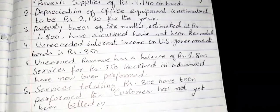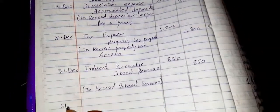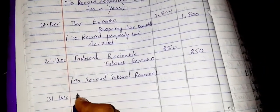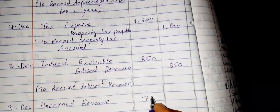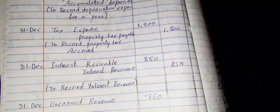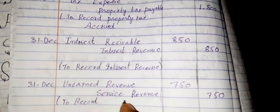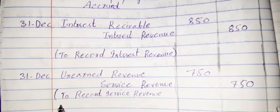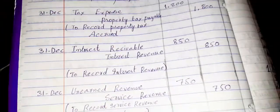Number 5: we will record adjusting entry number 5 with date 31st December. Revenue which we have received in advance — we have not yet performed the service — so we will write unearned revenue as debit for 750, and credit service revenue for 750, since we have now earned it. We will pass the narration 'to record service revenue earned in advance.'